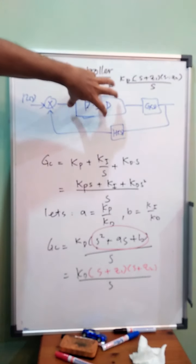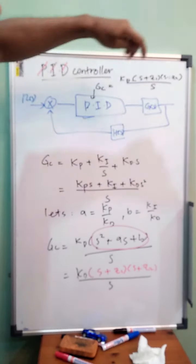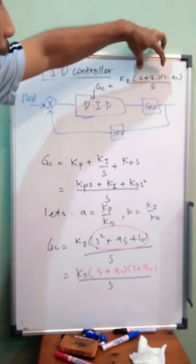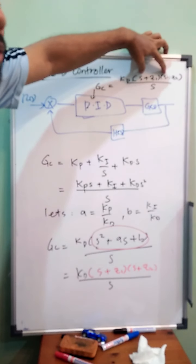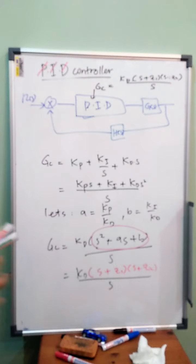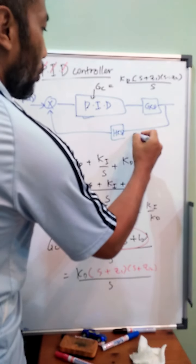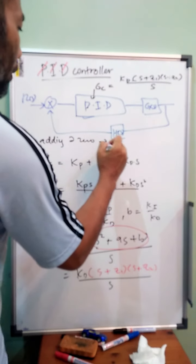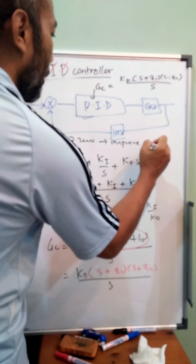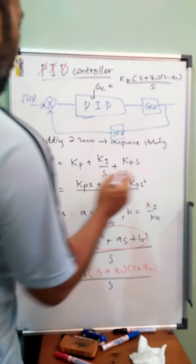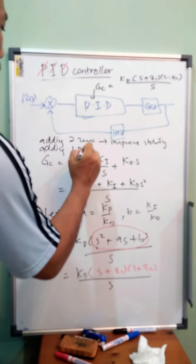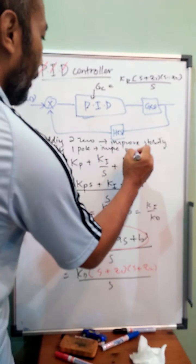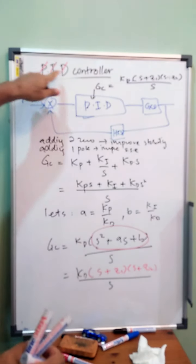So we can say that by adding this controller, we are adding 2 zeros and 1 pole. When we add 2 zeros, 2 zeros means that we can improve the stability. And we are adding 1 pole, so we can improve steady state error. This is the advantage of PID control system.